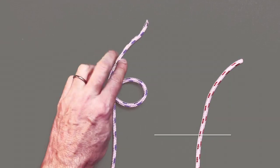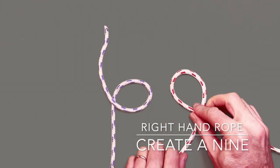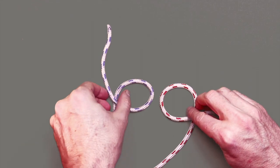Step two is to take the right hand piece of rope and create a nine, this time with the working end sitting underneath the standing end of the rope.